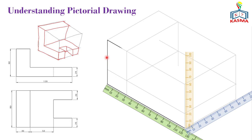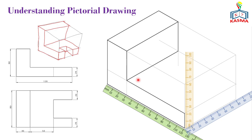Now we can darken all the surfaces on the front view — you can darken this L-shape. From the top view, you can darken this rectangle because we are sure all the surfaces are placed at this specific location. Then for the remaining lines, you can darken these two and you'll have this part.